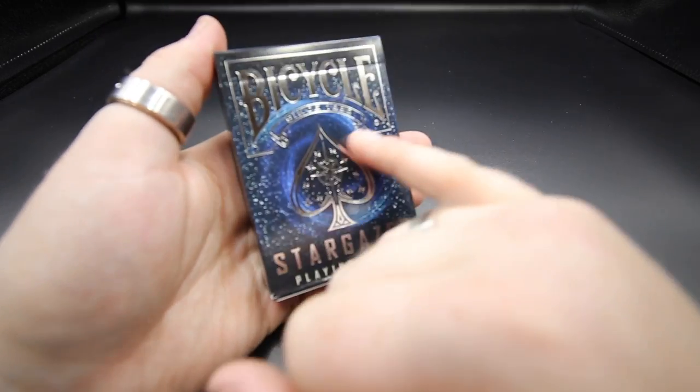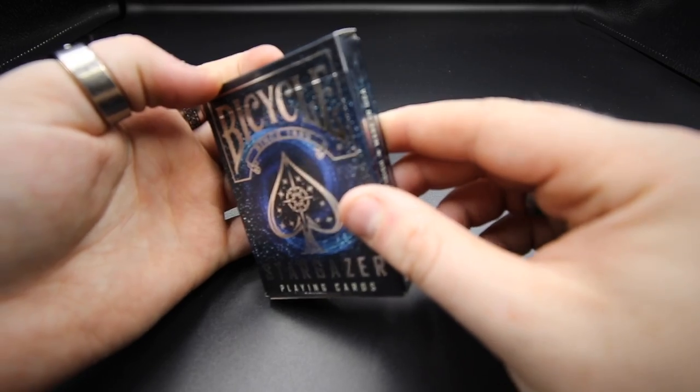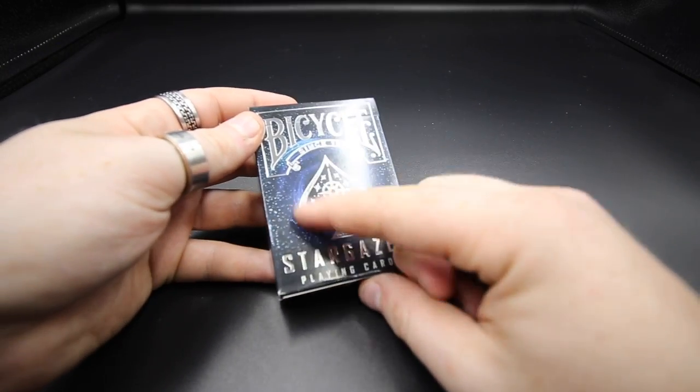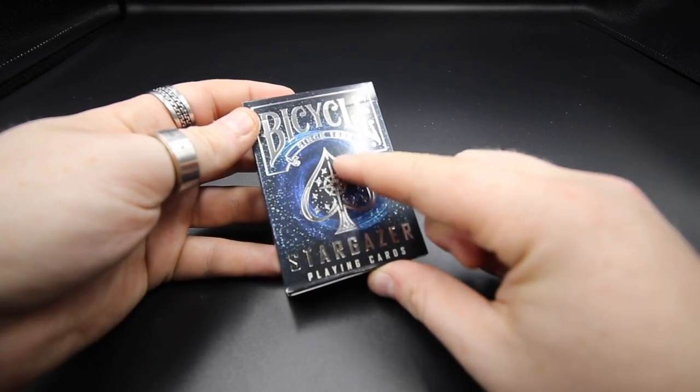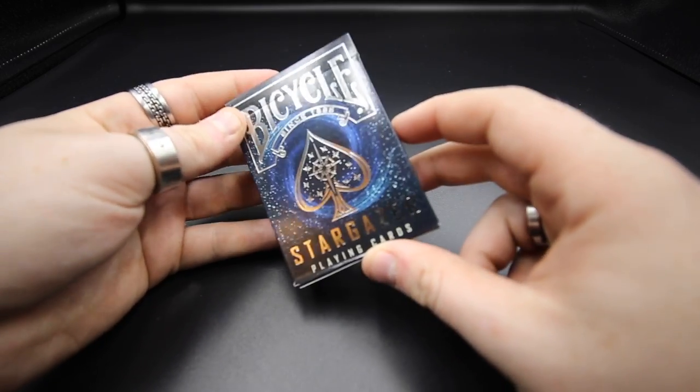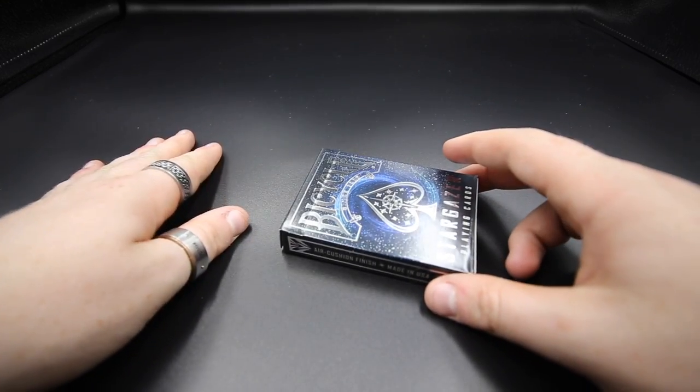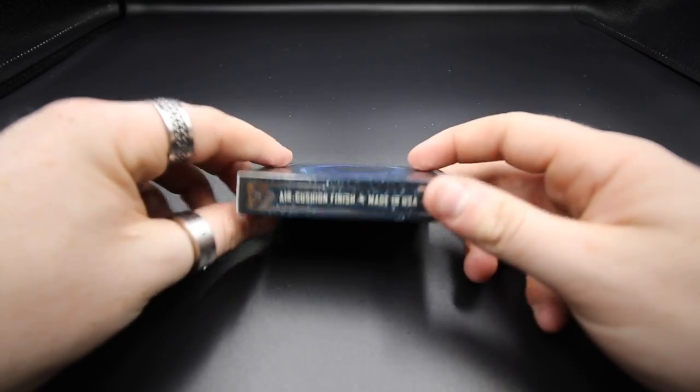So the front it has Bicycle and then it has Trust since 1885. And then it has the Ace of Spades there with the stars going across and Stargazer and then playing cards. And you can see it's really shiny and reflective. That's why I've used the black background today just so you can get a better idea.